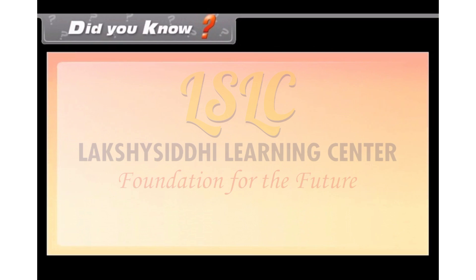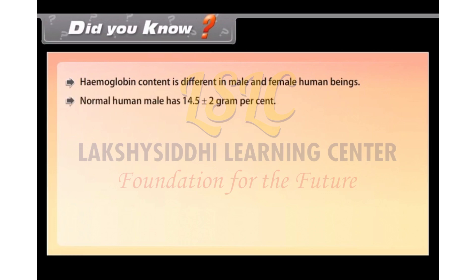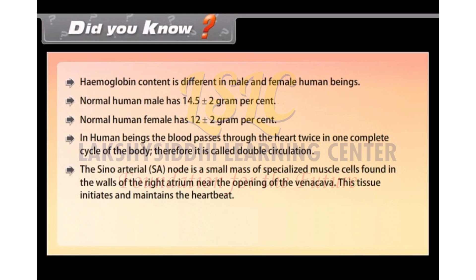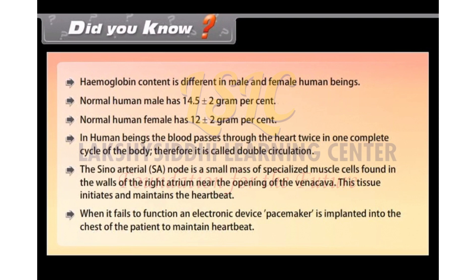Did you know: Hemoglobin content is different in male and female human beings. Normal human male has 14.5 plus or minus 2 gram percent, while normal human female has 12 plus or minus 2 gram percent. In human beings, blood passes through the heart twice in one complete cycle of the body, and therefore it is called double circulation. The sino-atrial S-A node is a small mass of specialized muscle cells found in the walls of the right atrium near the opening of the vena cava. This tissue initiates and maintains the heartbeat. When it fails to function, an electronic device called a pacemaker is implanted into the chest of the patient to maintain heartbeat.